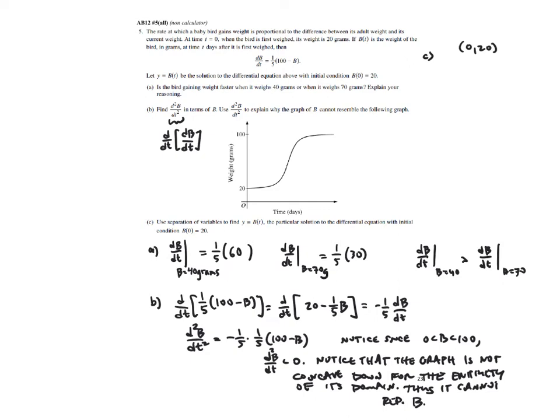I'm going to separate by dividing by 100 minus b and multiplying by dt. Let's integrate. Sneaky little u-sub on the left side—this is going to be negative natural log of the absolute value of 100 minus b. Check that. Using a u-sub on the right side, we'll get one-fifth t plus c.